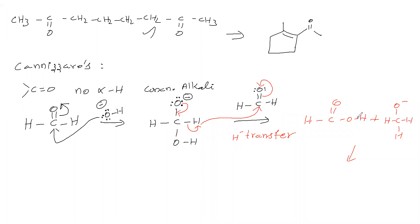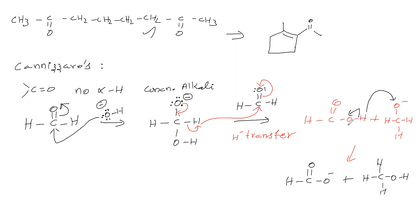From one formaldehyde, HCO–O⁻ (formate) is produced — that is oxidation. The other formaldehyde gives CH₃O⁻ (methoxide) — that is reduction. One formaldehyde undergoes oxidation to give formate anion; another formaldehyde undergoes reduction to give methyl alcohol. Therefore formaldehyde undergoes both oxidation and reduction — this is called a disproportionation reaction.